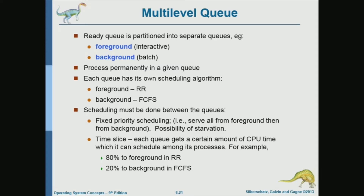It definitely doesn't make sense to do first come first serve in the foreground, because in the foreground you need a scheduling algorithm that properly schedules interactive processes. The best algorithm for interactive processes is round robin. When you have multiple interactive processes, round robin gives each process a time slice, so all processes get time slices and no process has to wait for a long time.